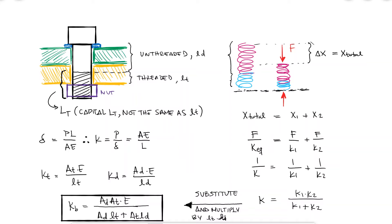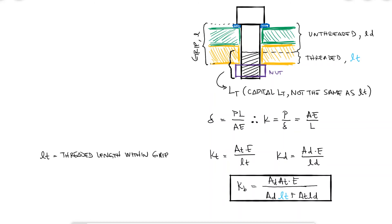The subscripts T are for the threaded portion within the grip, so the length LT is not the total threaded length, but whatever portion of it is inside the grip L. AT uses the tensile stress area, which appears in textbook tables, but it's just the area using the mean value between the pitch diameter and the root diameter.